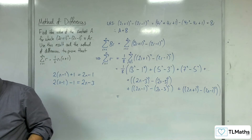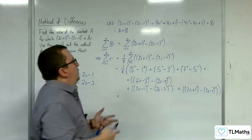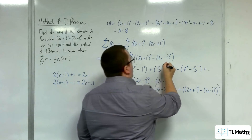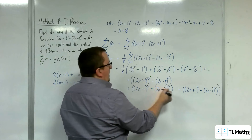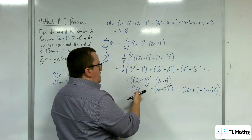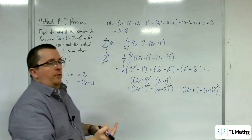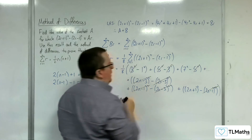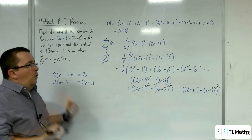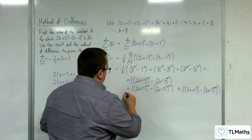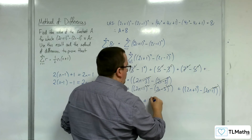Our job here is to identify which bits cancel — this is the method of differences, looking at subtractions effectively. We spotted that the 3²s cancel, the 5²s cancel, the (2n−3)²s cancel, and the (2n−1)² cancels with that term there. The 7² would go with the next term, giving a minus 7². So what am I left with? I've got the one eighth out the front, minus 1², and plus (2n+1)².